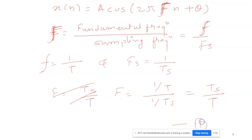Let us call this equation 1, where f equals Ts by T. To make xN periodic, there should be a condition that xN should equal xN plus capital N.